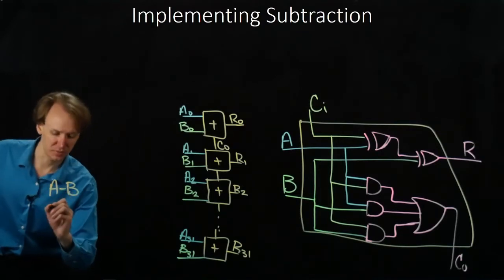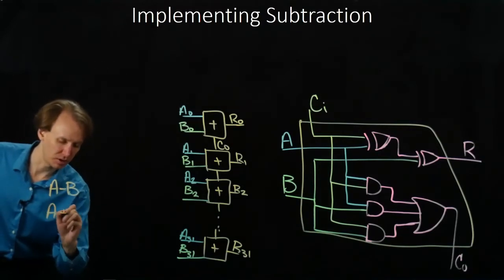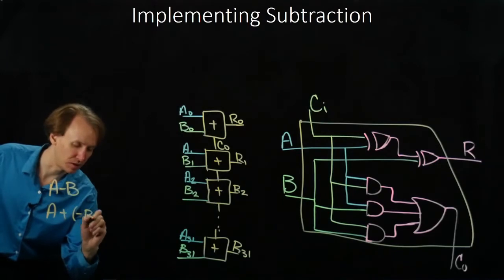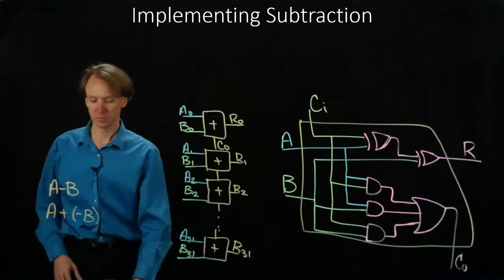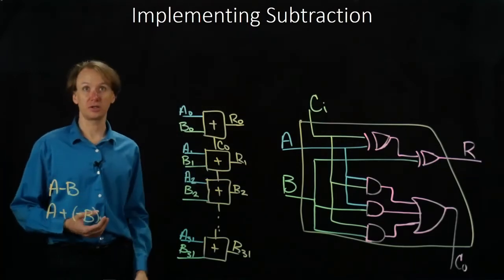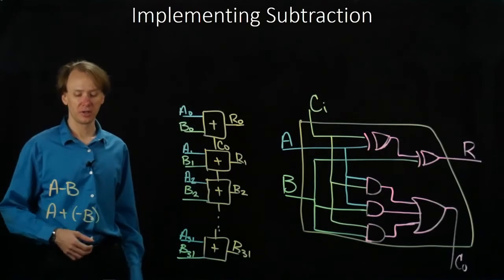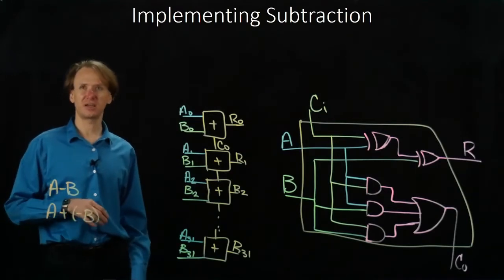Well, I could potentially do A plus negative B. Then I'd be doing an addition operation, and I already have the hardware for addition, but I'd need this negative B thing.